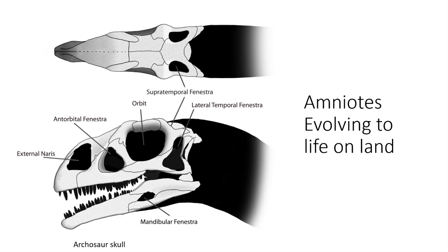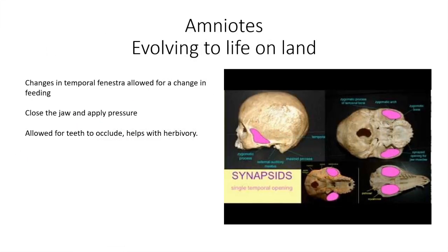These changes in the temporal fenestra allowed for changes in feeding. It's been thought that they allow muscles to attach to the skull and actually bulge out when you're chewing, so this allows your jaw to apply more pressure — you can bite hard. Nobody gets afraid of being bitten by a frog, but you definitely don't want to get bitten by a lot of mammals or even some reptiles because they have a lot of pressure. When it comes to mammals, we have uniquely shaped teeth — we're called heterodonts, meaning 'other teeth' — so we have canines, molars, and incisors, jaws that can crunch down very hard, and specialized teeth that can grind up plant material.